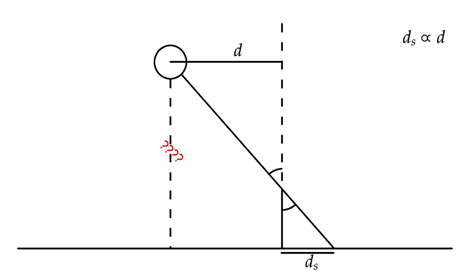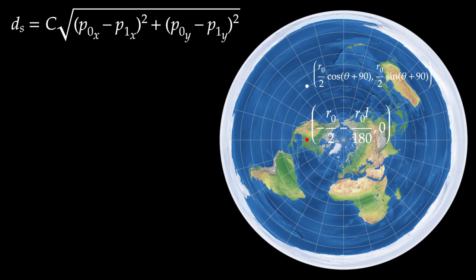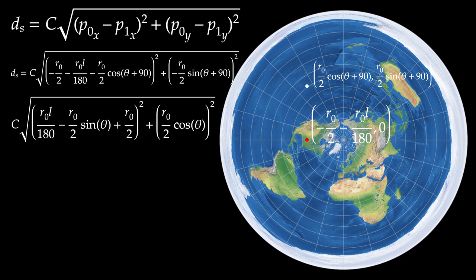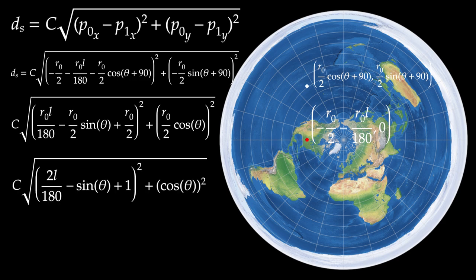However, because the flat earth model doesn't give a figure for the height of the sun above the earth, we can just say ds equals dc, where c is some constant, giving us ds equals c square root P0x minus P1x squared plus P0y minus P1y squared, which we can substitute to get ds equals c square root negative R0 over 2 minus R0 L over 180 minus R0 over 2 cosine theta plus 90 squared plus negative R0 over 2 sine theta plus 90 squared, and slightly simplify to c square root R0 L over 180 minus R0 over 2 sine theta plus R0 over 2 squared plus R0 over 2 cosine theta squared. Since we are already multiplying by constant c, we can set R0 to an arbitrary value like 2 to simplify even further to c square root 2 L over 180 minus sine theta plus 1 squared plus cosine theta squared.